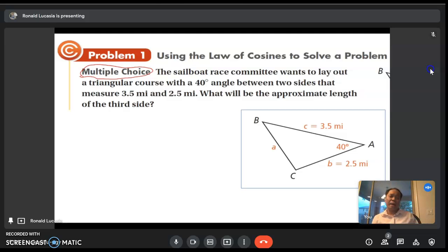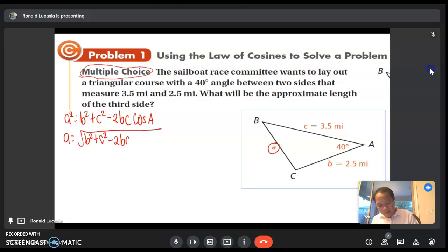What is missing is a. We know that a² = b² + c² - 2bc cos A, or rather a = √(b² + c² - 2bc cos A). Our b is 2.5, our c is 3.5, and our given angle is 40 degrees.